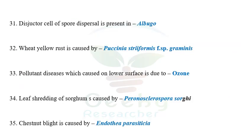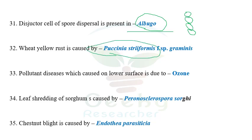Question 31: the disjunctor cell of spore dispersal is present in Albugo. The disjunctor cell of spore dispersal can be seen in Albugo. This is also called a separation disc. The next question: wheat yellow rust is caused by Puccinia striiformis, but the options given are Puccinia striiformis f. sp. tritici, Puccinia graminis f. sp. tritici, or Puccinia recondita f. sp. graminis. We know wheat yellow rust is caused by Puccinia striiformis, but each option also included a forma specialis, so be careful selecting the correct one.